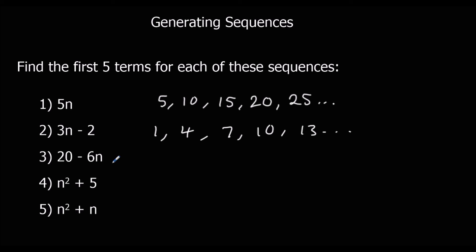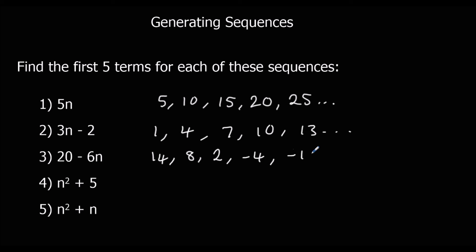For 20 minus 6n: 20 minus 6 times 1 is 14. 20 minus 6 times 2, which is 12 — gives 8. 20 take away 6 times 3, which is 18 — gives 2. 20 take away 6 times 4: 20 take away 24 is minus 4. And it's going down in 6s.